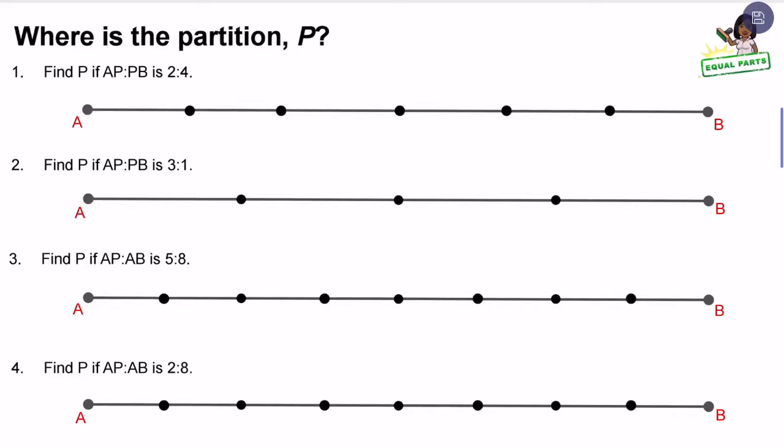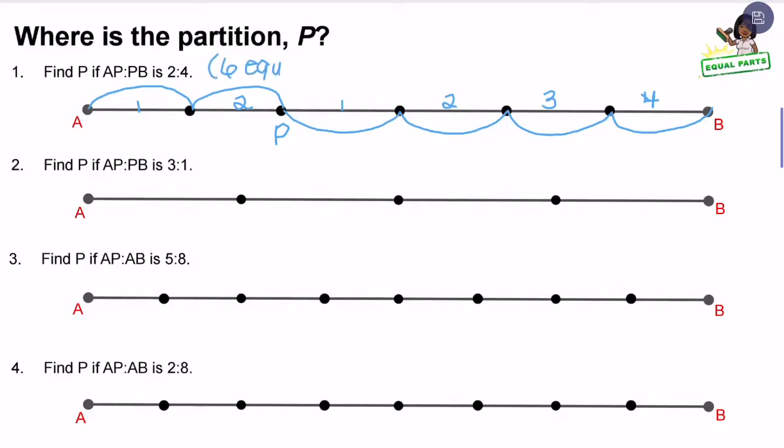The goal of this lesson is to find the partition, or P. You're going to be given a ratio, and you have to determine where P goes on the line segment. The first problem says find P if AP to PB is two to four. So let's mark this first picture to represent the ratio. We have partitioned our line segment into the ratio two to four. From A to P we have two equal parts, and from P to B we have four equal parts, which altogether make six equal parts.